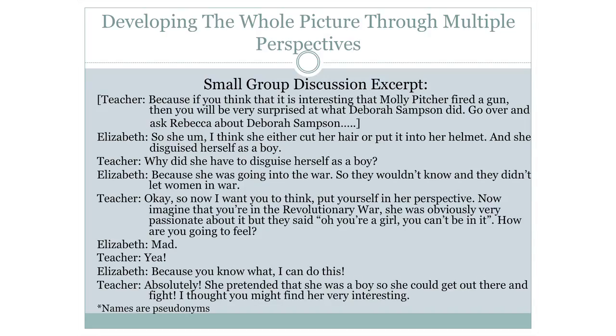Within a small group discussion, the teacher and student discussed an important female figure in the American Revolution, Deborah Sampson. The teacher suggested, 'If you think it's interesting that Molly Pitcher fired a gun, then you will be very surprised at what Deborah Sampson did.' A student reported back to her group: 'She cut her hair or put it into her helmet, and she disguised herself as a boy.' When asked why, the student explained, 'Because she was going into the war and they didn't let women in war.' The teacher then asked students to put themselves in Deborah Sampson's perspective — imagining being told 'you're a girl, you can't be in it.' The student replied, 'Mad,' and the teacher affirmed the response. The student was able to explore a woman's perspective and connect emotionally to develop a full understanding of how this woman may have felt during the Revolutionary War.